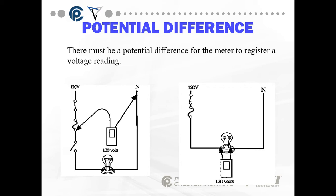In the second diagram, we're going across the light bulb. The light bulb, if you look closely at it, has a broken filament. There's still 120 volts, because 120 volts is what you would read across any open load, because it's a potential to do work.